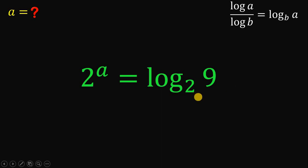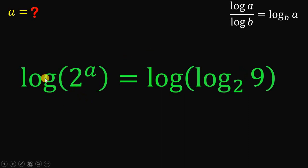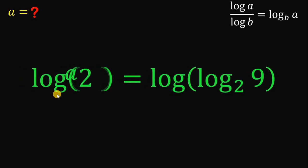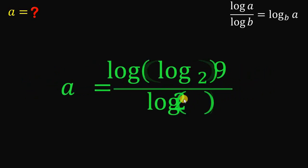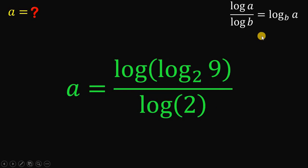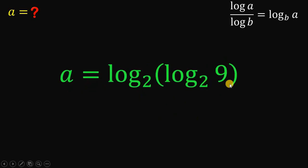And now, to isolate the variable A, let's get again the logarithm on both sides. Using some laws of logarithm, the left-hand side of our equation can be written as A multiplied by the logarithm of 2. And to isolate again the variable A, let's divide both sides by logarithm of 2. Using this identity, the right-hand side can be written as logarithm of logarithm of 9 to the base of 2, to the base of 2.